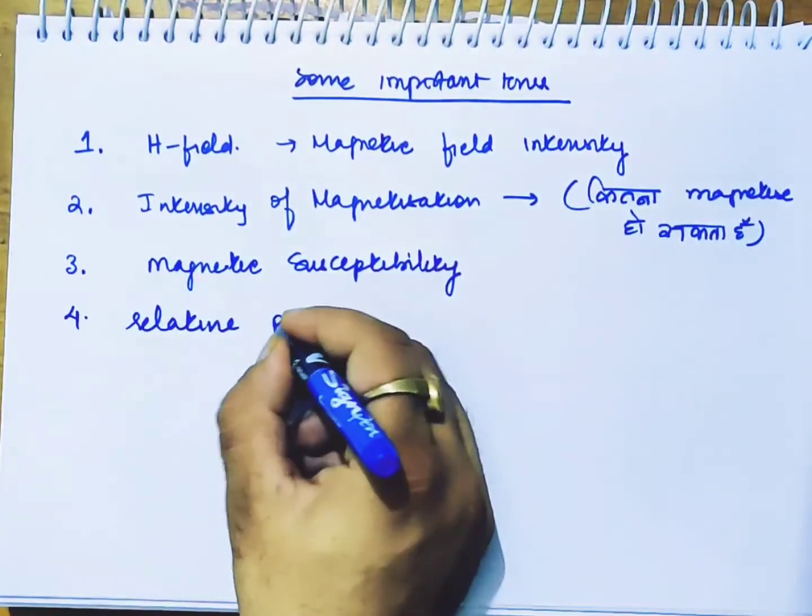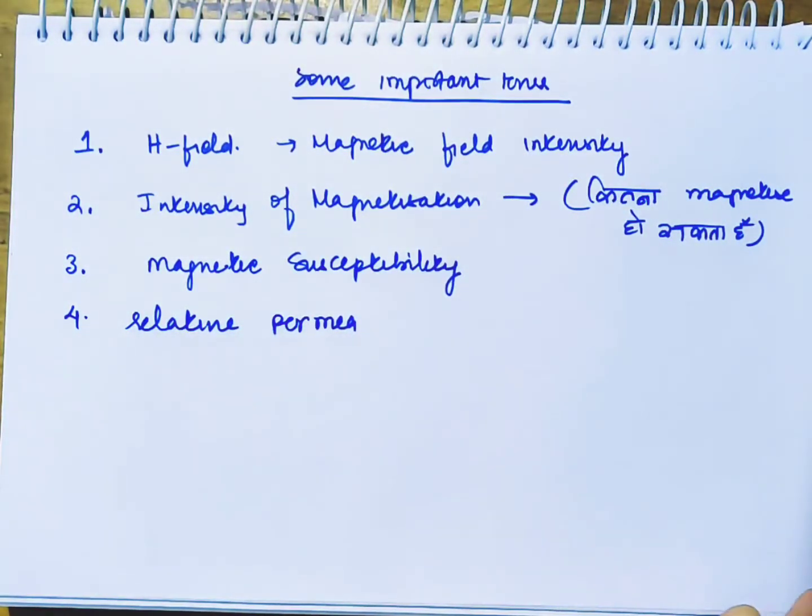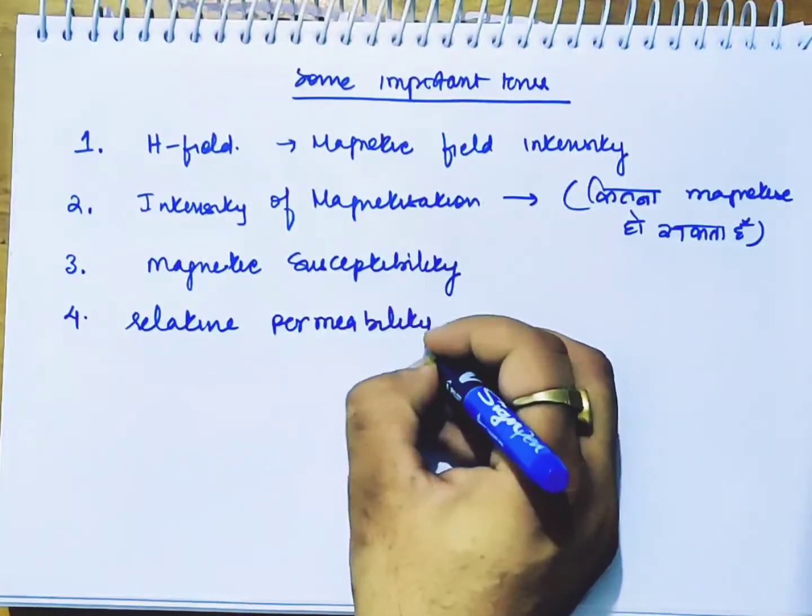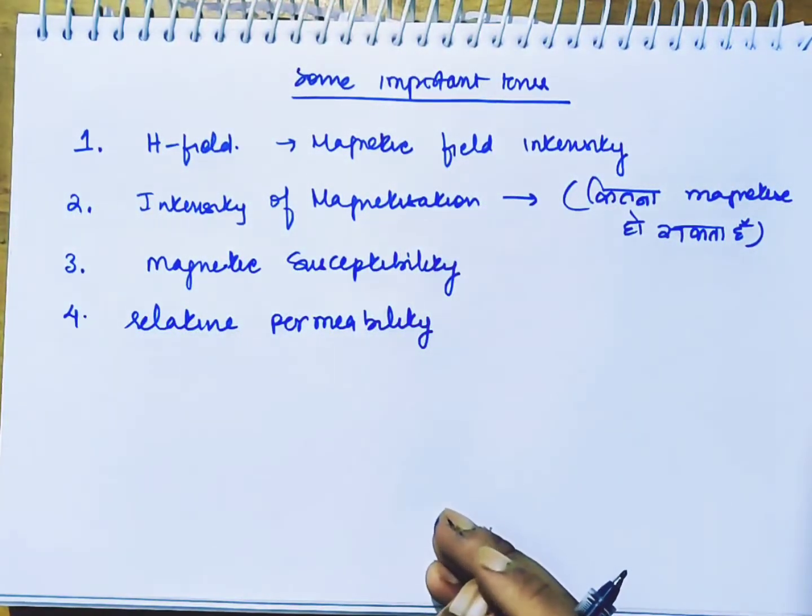Relative permeability. Magnetic permeability is already known - permeability mu. You all know it's magnetic permeability. These four terms are very important.